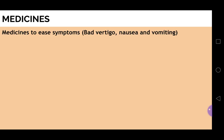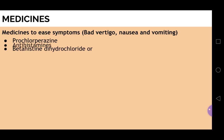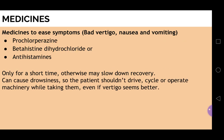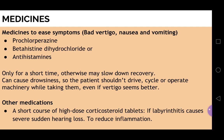Some medicines can be used for bad vertigo, nausea, and vomiting. These include prochlorperazine, betahistine dihydrochloride, or antihistamines — but these should be used short-term only, otherwise they may slow down recovery. Some of these medicines can cause drowsiness, so the patient shouldn't drive, cycle, or operate machinery while taking them, even if vertigo seems better. In special circumstances — for example, if labyrinthitis causes severe sudden hearing loss — a short course of high-dose steroid tablets can be used to reduce inflammation. If the underlying cause is bacterial middle ear infection, antibiotics can be prescribed.